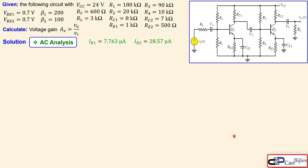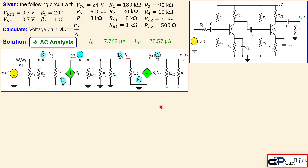Now let's look at the AC analysis. We collect the important parameters — base currents for stage one and stage two. For the small signal model, in the AC domain we disable the DC sources and short all capacitors: C1, CE1, CE2, C2, C3 are all shorted, and VCC is treated as ground.